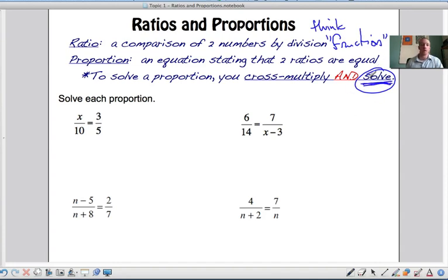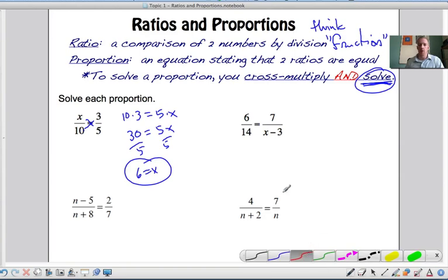So here cross multiply, we've got 10 times 3 and then 5 times x or x times 5. So 30 equals 5x, and then divide both sides by 5 and you get 6 equals x. There's your answer.